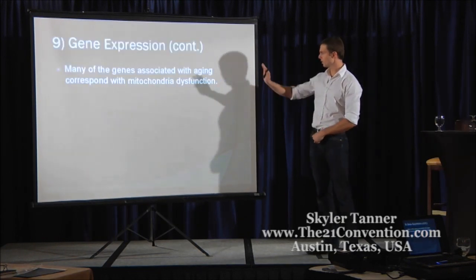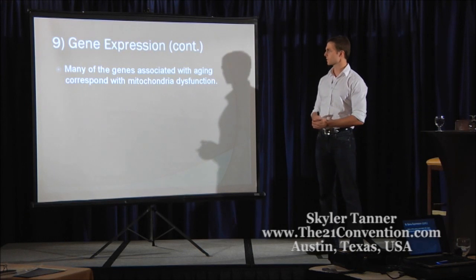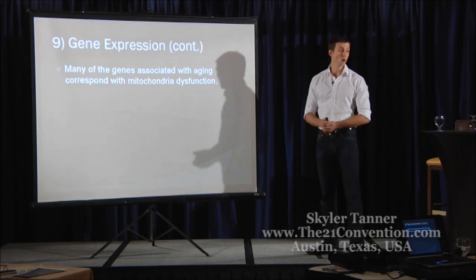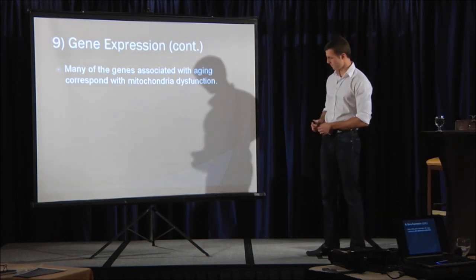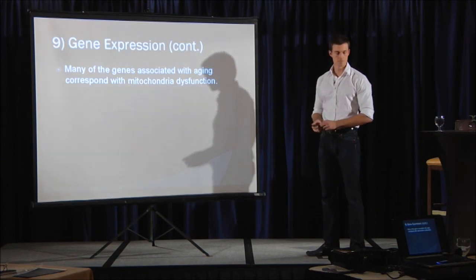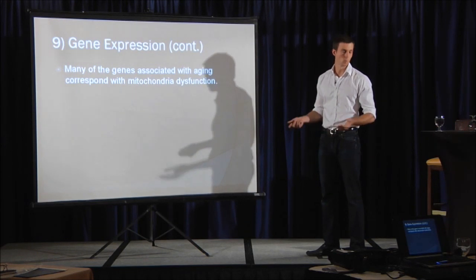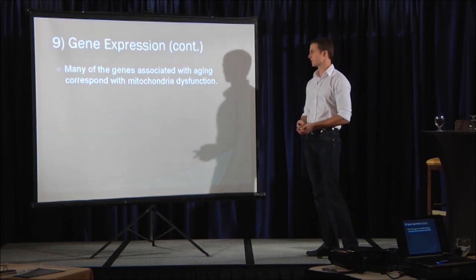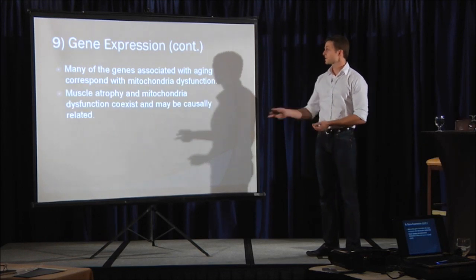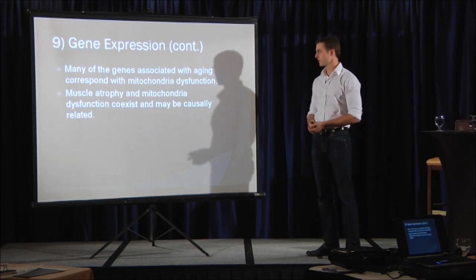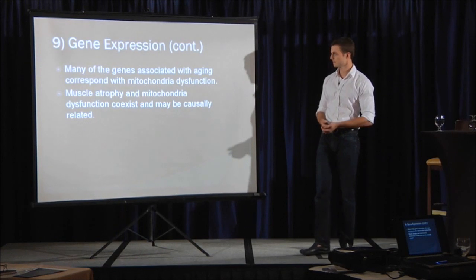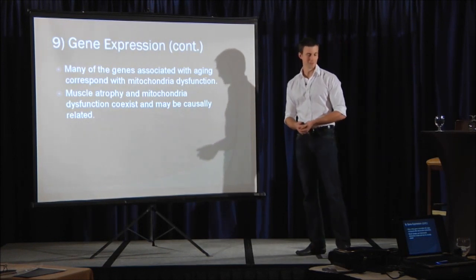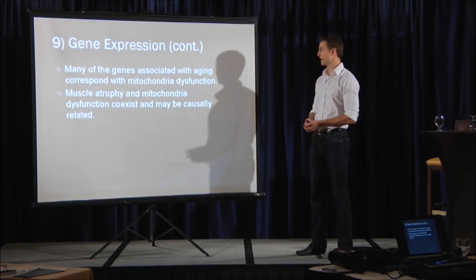So you've got all of these genes associated with aging corresponding with mitochondrial dysfunctions, the powerhouse of the cell. If you run out of power, you know, if you can't metabolically continue to support that cell, it's going to die. There are some immortal cells. But this, in a general sense, is what we're talking about with mitochondrial dysfunction. Muscle atrophy and dysfunction, they associate together. And they might be causally related. That's science speak. They are causally related, but in studies, you have to say might be causally related.